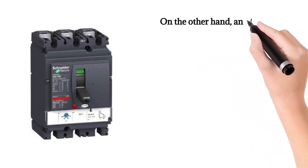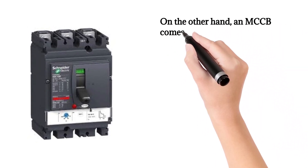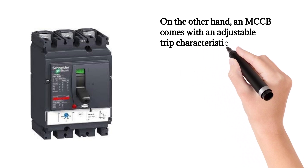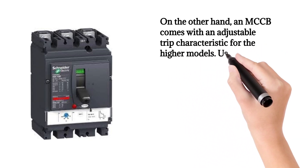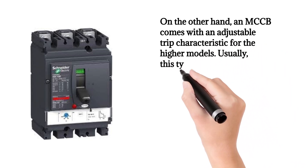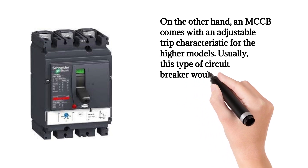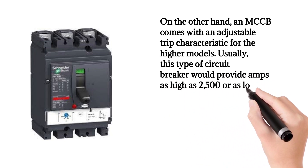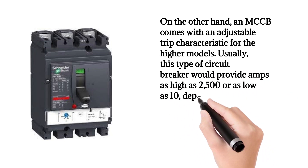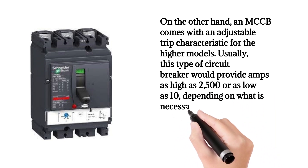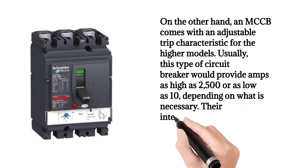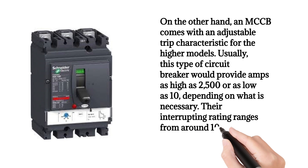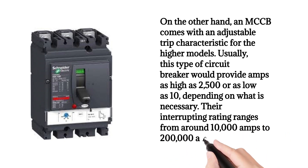On the other hand, an MCCB comes with an adjustable trip characteristic for the higher models. Usually, this type of circuit breaker would provide amps as high as 2,500 or as low as 10, depending on what is necessary. Their interrupting rating ranges from around 10,000 amps to 200,000 amps.